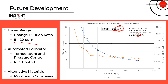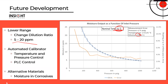We have a project underway developing an automated version with temperature and pressure control of the block via PLC, allowing you to specify the desired output concentration of water. We're also looking at alternative materials for specific applications — some customers have asked about moisture in chlorine service, which would require different material choices.